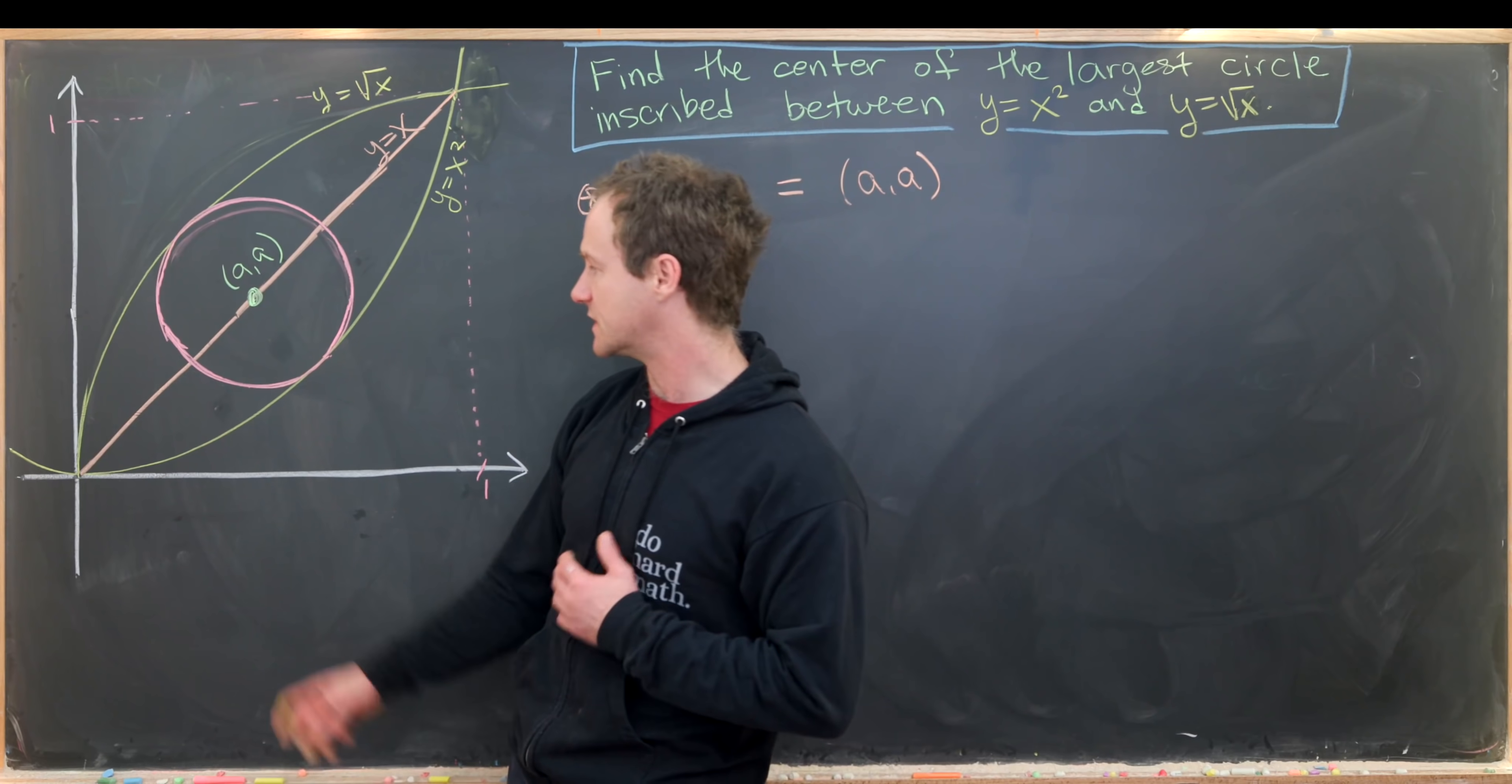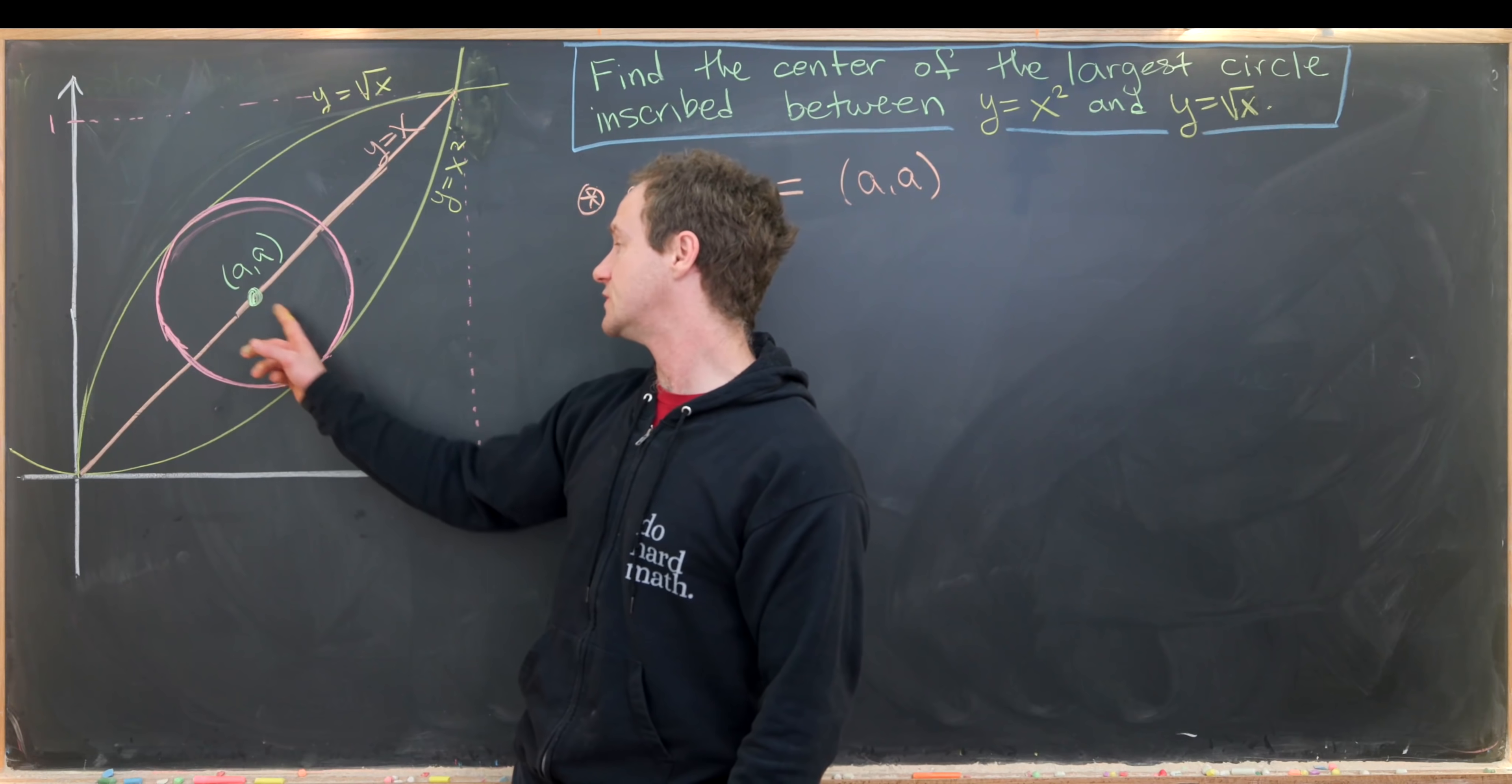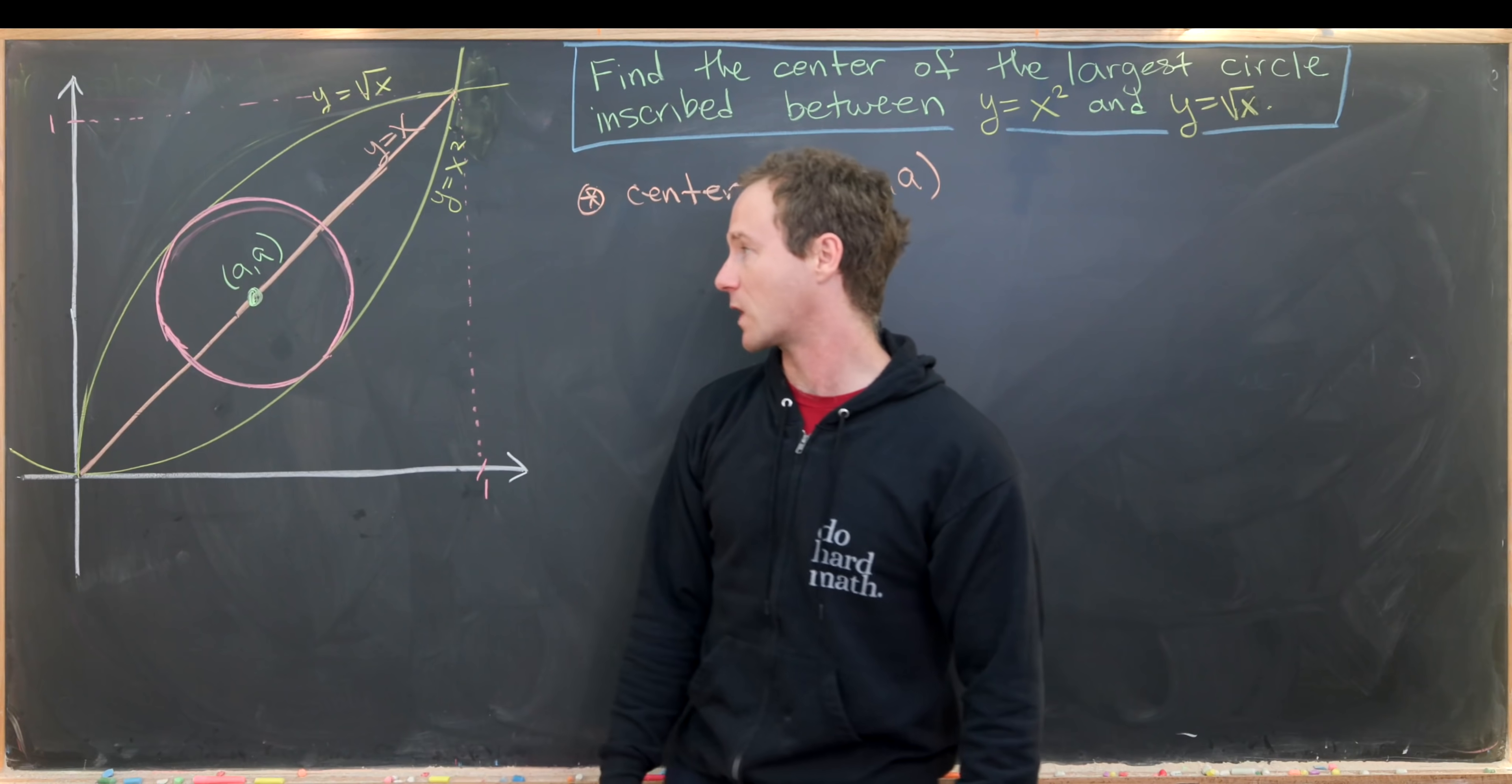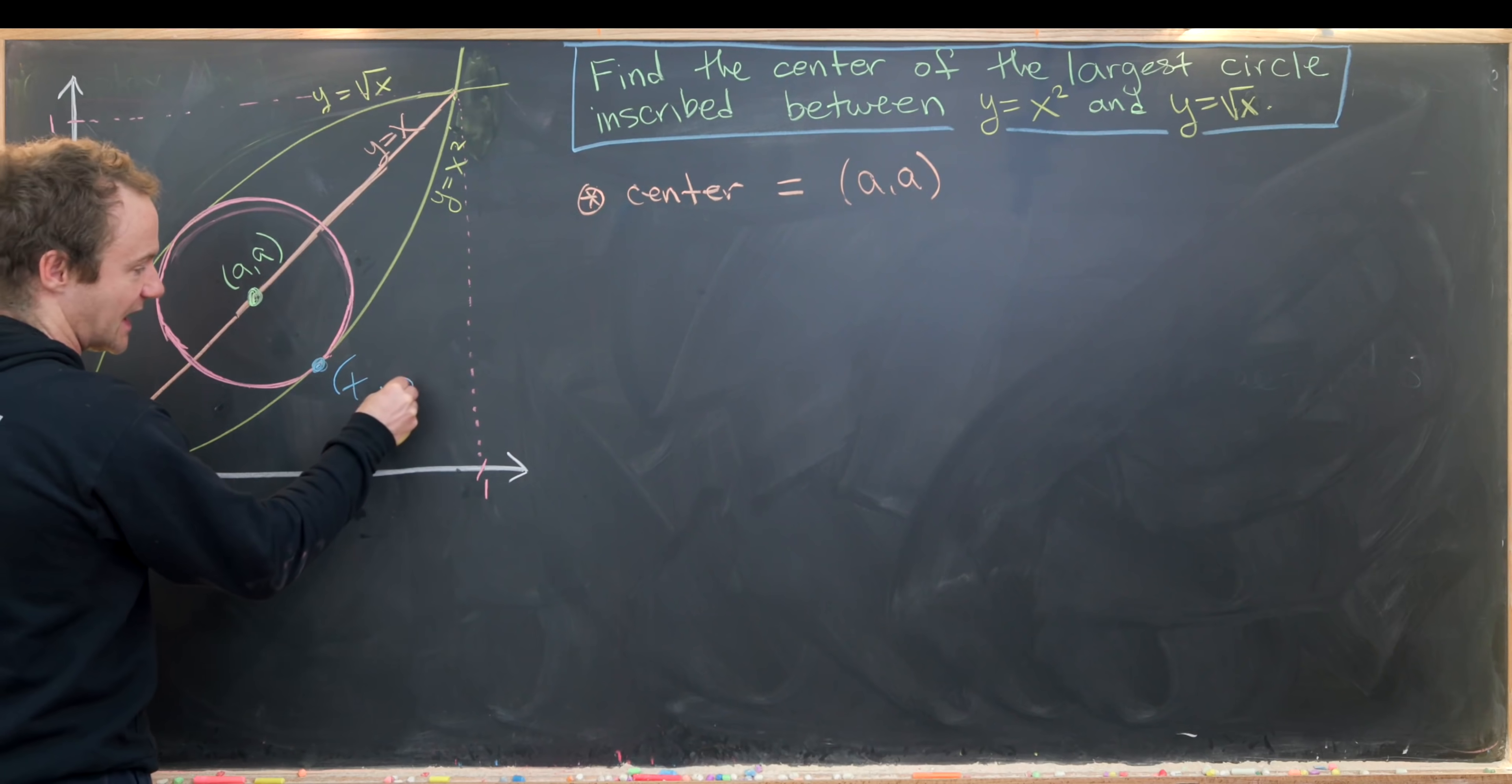Notice that the top half of the circle and the bottom half will be the same. So all we need to do is make some measurement between this point a comma a and y equals x squared to get an idea for where a comma a is. I'll draw a point right here which is tangent to our circle. This point will have the form x comma x squared.